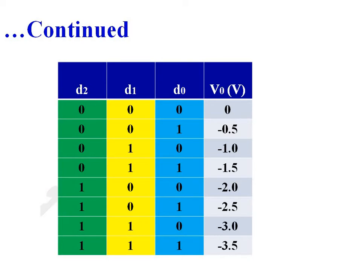This is the truth table of the circuit. When the input combination is 000, output voltage is equal to 0. When input combination is 001, output voltage is equal to minus 0.5V.